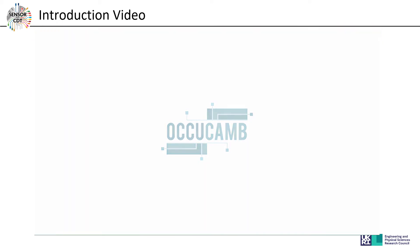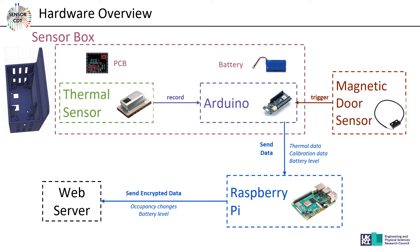The hardware uses a thermal sensor that detects movement by detecting heat. As members move through the door, it detects this movement and correlates it to occupancy. The data is then analyzed using an Arduino, which records the data and sends it to a Raspberry Pi. The Raspberry Pi analyzes all the data and sends the encrypted data to the web server, where it can be viewed on the live map.